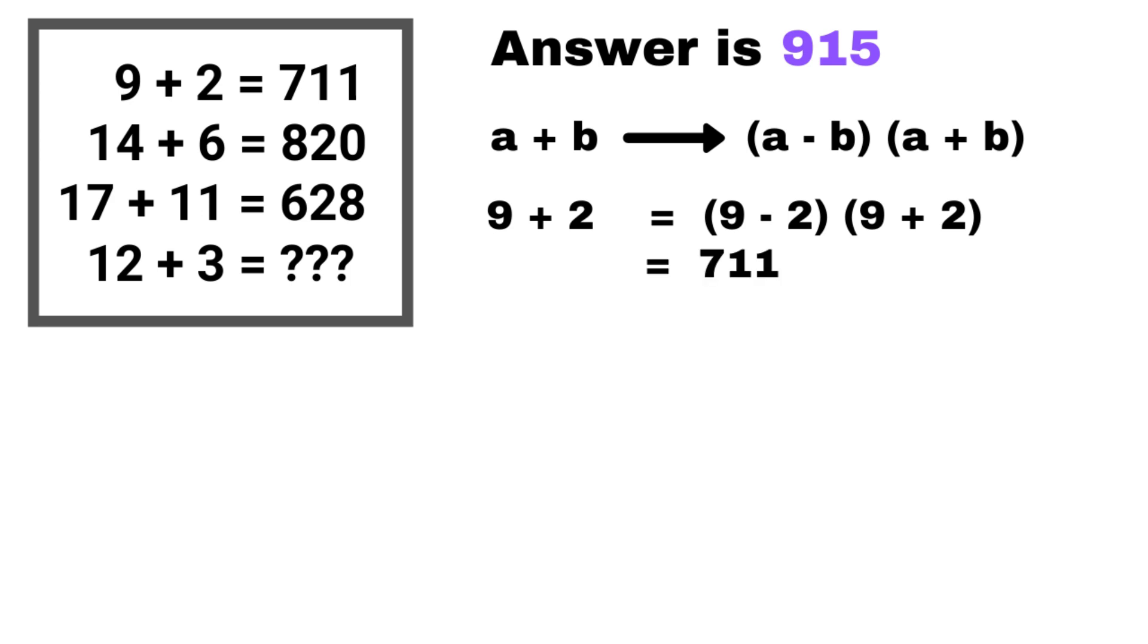The second line which is 14 plus 6 equals 820. The difference between the two numbers is 8 and the sum is 20. Write the difference first and then write the sum next to it and the answer is 820.